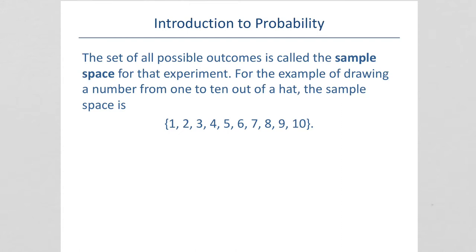all numbers from 1 to 10 are outcomes. The set of possible outcomes is called the sample space for that experiment.